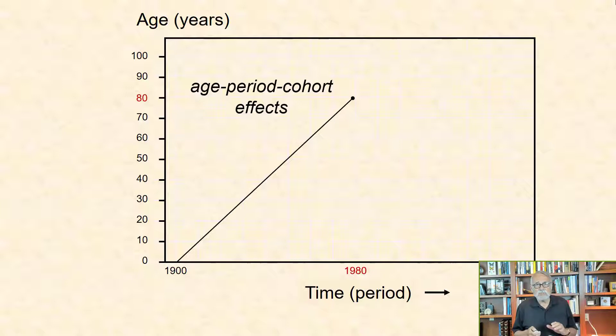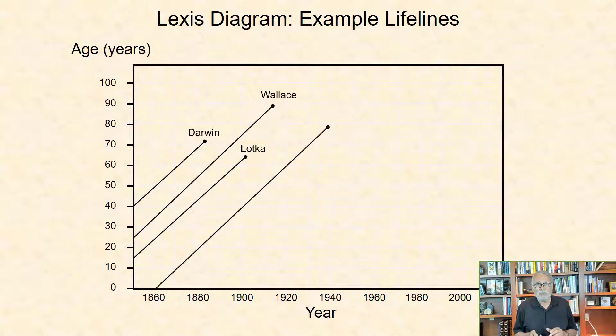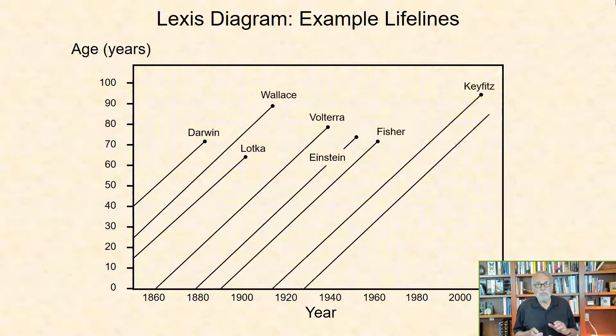As an example here, I show a Lexis Diagram depicting the age-period relationships of eminent scientists, from Charles Darwin and Alfred Russell Wallace to Nathan Keyfitz and E.O. Wilson.